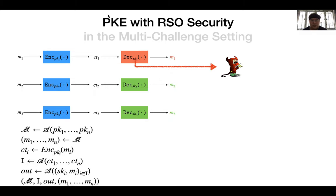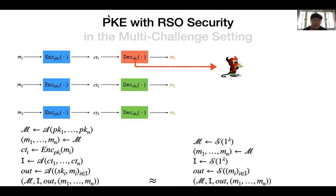Formally, the adversary for RSO Security will first receive a list of public keys. Then the adversary will specify some message distribution, and then receive some ciphertexts encrypting messages sampled from this distribution. Then the adversary is able to corrupt some users and receive their secret keys and messages sent to them. Finally, the adversary will output something. Security requires that the output of the adversary can be simulated by a simulator that only takes as input the messages sent to the corrupted receivers. That's the definition of RSO Security.